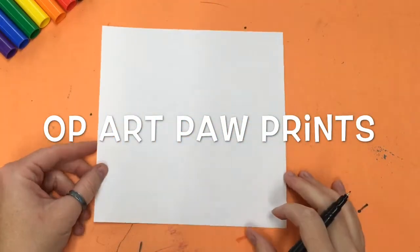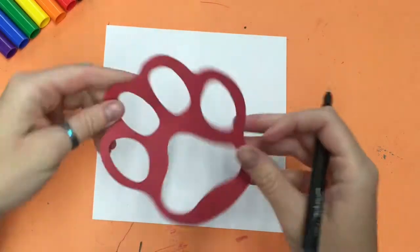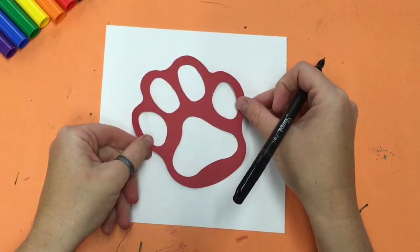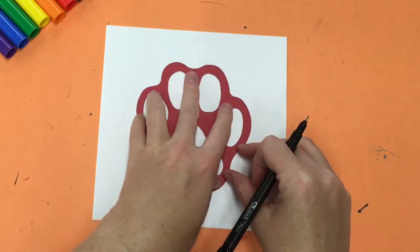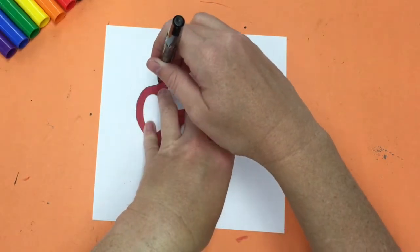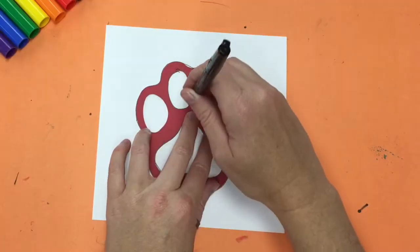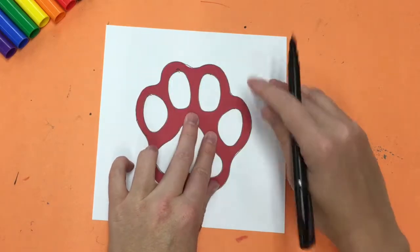Start off, as always, by writing your name on your paper and turning your paper over so your name is now on the back. Then use the tracer to decide where you want to place the paw print. Carefully trace around it with your pencil. Make sure to trace the inside parts as well.